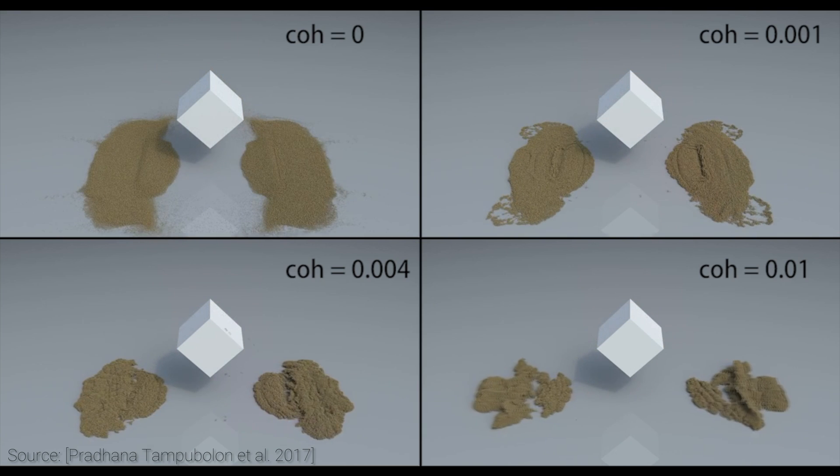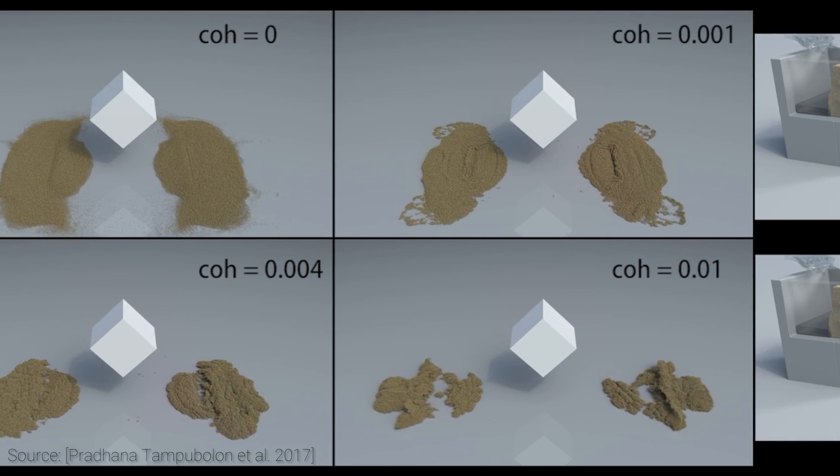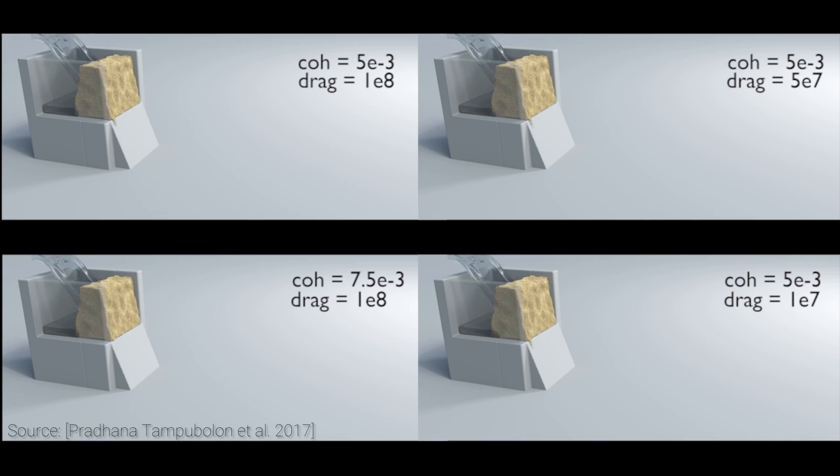The higher cohesion is, the harder it is to break the sand up, the bigger the clumps are. This is an important quantity for our simulation because the higher the water saturation of this block of sand, the more cohesive it is.